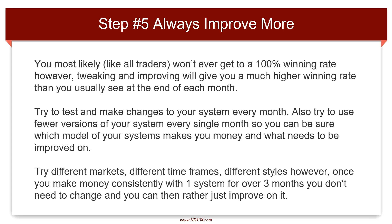Step five: always improve more. You most likely won't ever get to a 100 percent win rate, however tweaking and improving will give you a much higher winning rate than you usually see. At the end of each month, try to test and make changes to your system. Use fewer versions of your system every single month so you can be sure which model makes you money. Try different markets, different time frames, and different styles — however, once you make money consistently with one system for over three months, you don't need to change it; you can then just improve on it.